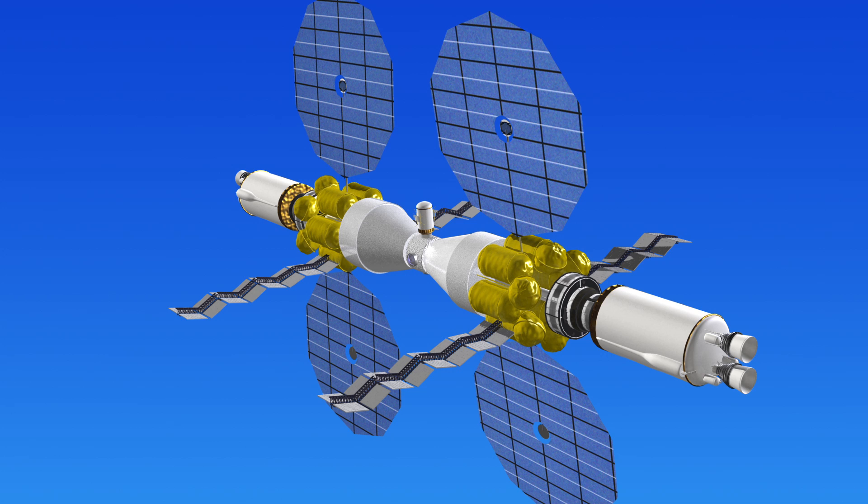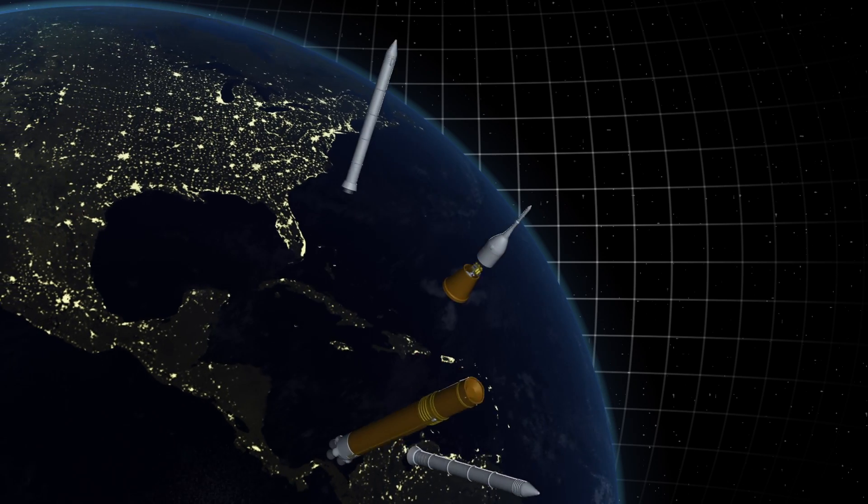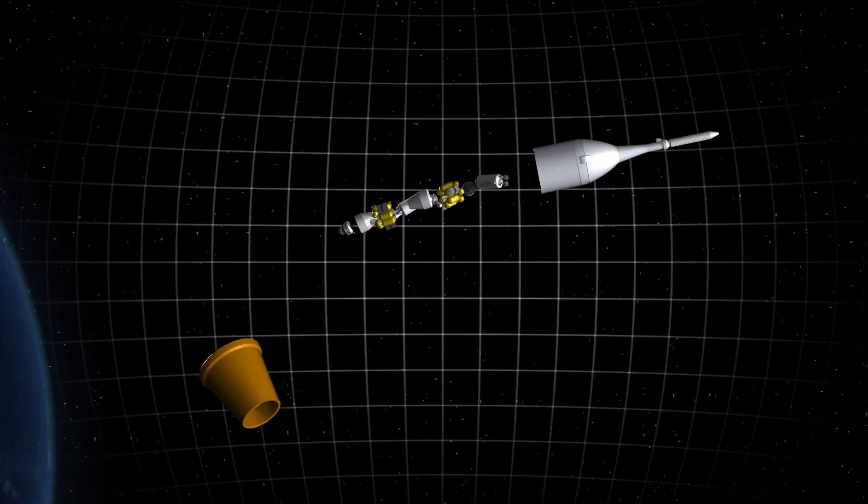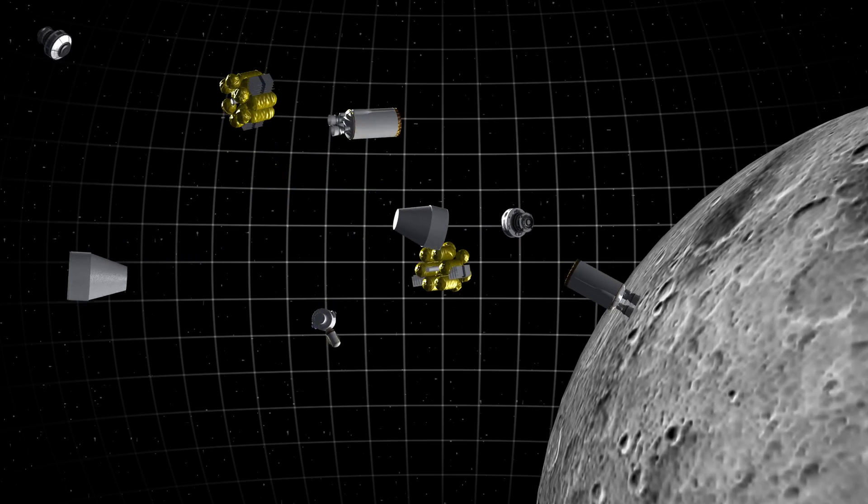The two capsules will link up with the larger habitat and laboratory modules. Lockheed Martin plans to launch the spacecraft in pieces to be assembled in space around the moon.